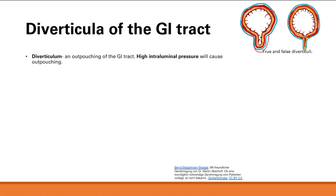That outpouching is because of high intraluminal pressure. We can divide these into true and false diverticula. A true diverticulum is an outpouching of all the layers of the gut wall. A false diverticulum, as you can see, does not involve the muscularis externa layer. What happens is you get an outpouching of the submucosa and mucosa through a defect or weakness in that muscular layer.